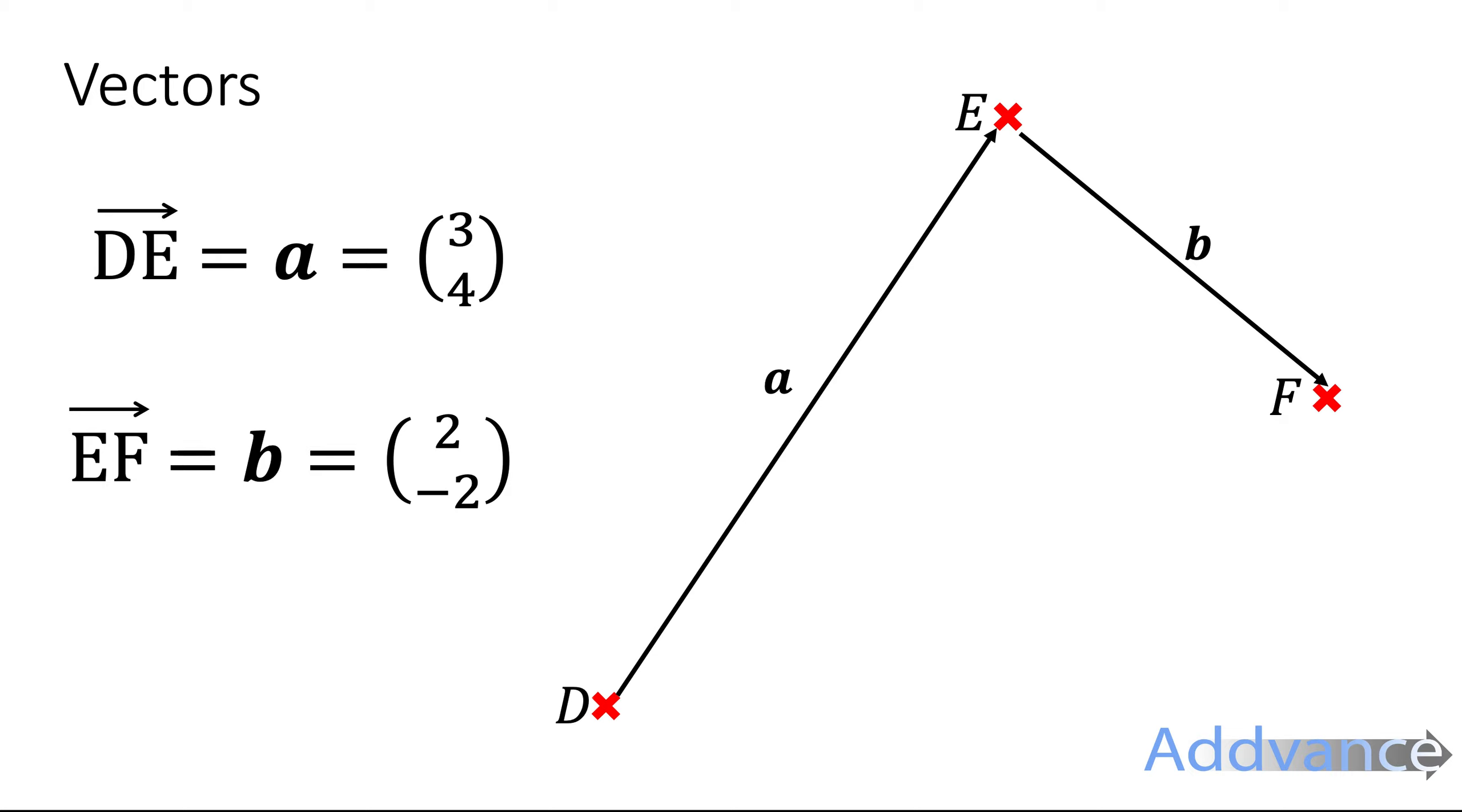Now we've got another vector E to F is called b and that goes two across minus two down.